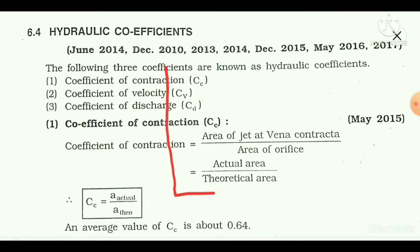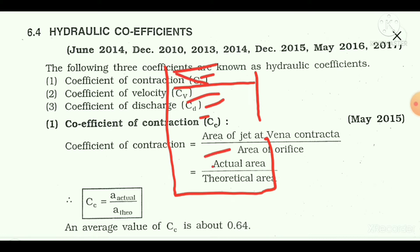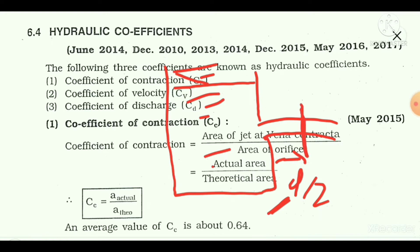Suppose this is the tank and here is the orifice, and any kind of liquid is filled in this tank. The liquid is coming out from this orifice in the form of a jet. At a certain location, generally at a distance of d/2 — where d is the diameter of the orifice — from the tank wall, we generally have a vena contracta.